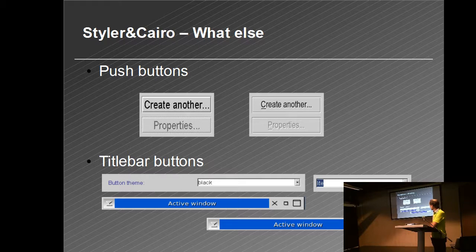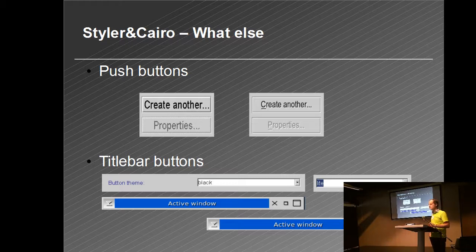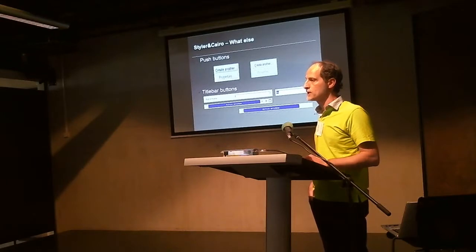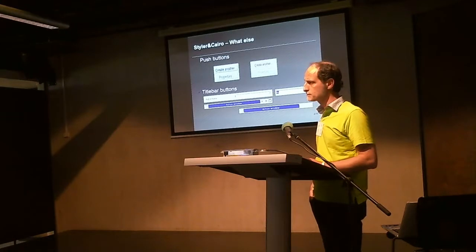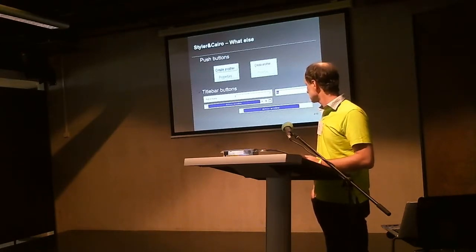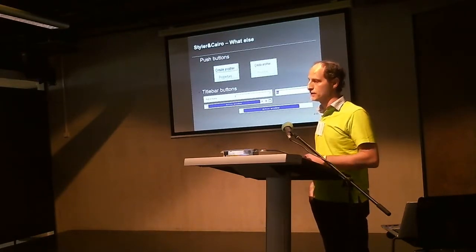I also did some work and now I can change title bar buttons as well. This is the same feature that you had with the theme manager in eComStation. But if you remember, the theme manager had to reboot to change the graphics. Here you have a change on the fly — you just change the theme, click apply, and you have new buttons on the title bar. So it's a completely different system, much easier and a lot easier to use.